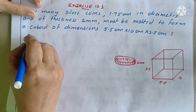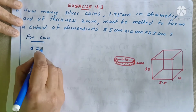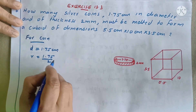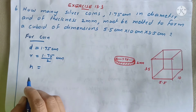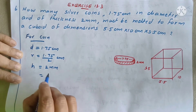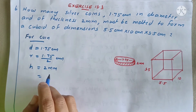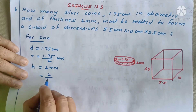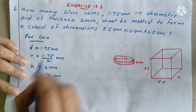For the coins: diameter d is equal to 1.75 centimeters. The radius is 1.75 divided by 2 — this is a cylinder. H is equal to the thickness, that is 2 mm. 2 mm is equal to centimeters: 10 mm equals 1 centimeter, so height equals 2 divided by 10 centimeters.